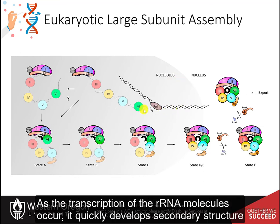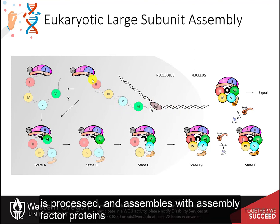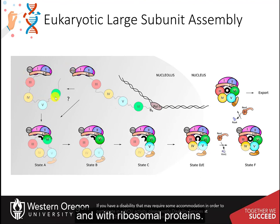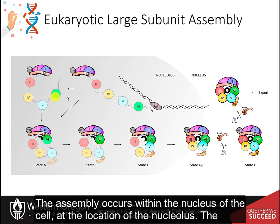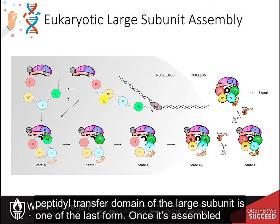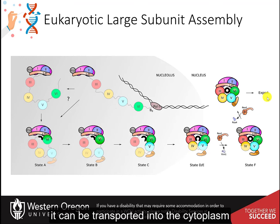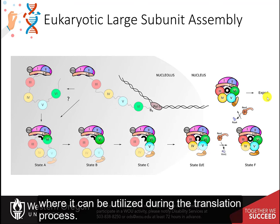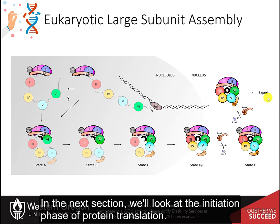Although the exact assembly of the 60S subunit is not currently known, a model has been postulated. As transcription of the rRNA molecules occurs, it quickly develops secondary structure, is processed, and assembles with assembly factor proteins and ribosomal proteins. The assembly occurs within the nucleus of the cell at the nucleolus. The peptidotransfer domain of the large subunit is one of the last to form. Once assembled, it can be transported into the cytoplasm where it can be utilized during the translation process.